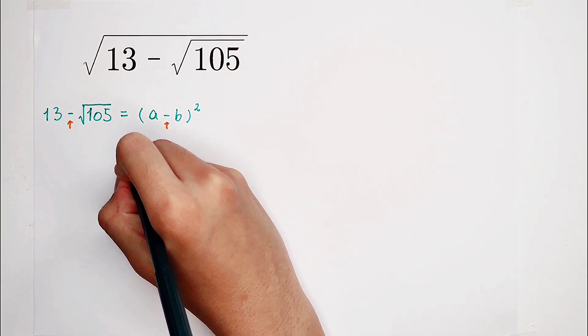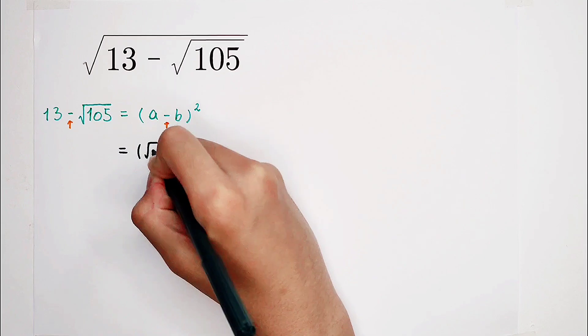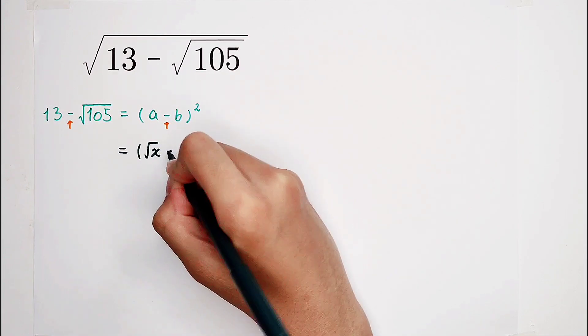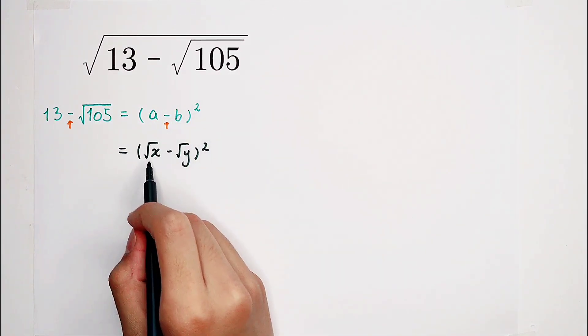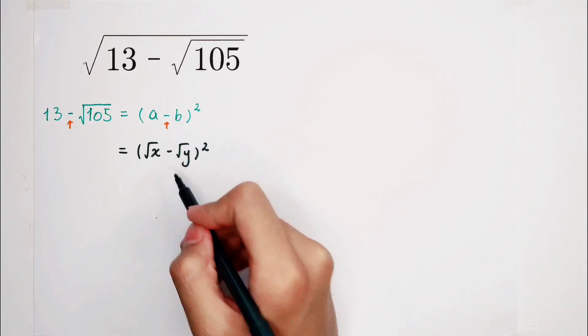So we hope that it can be written as square root of x minus square root of y, or squared. x equals a squared and y equals b squared. There are only a definition. It is not important.